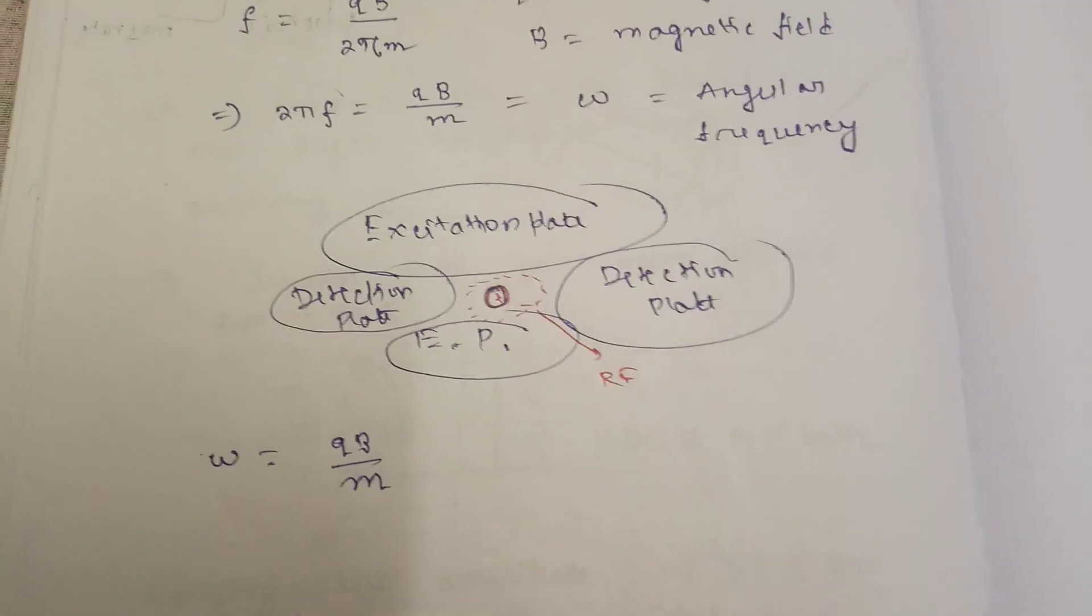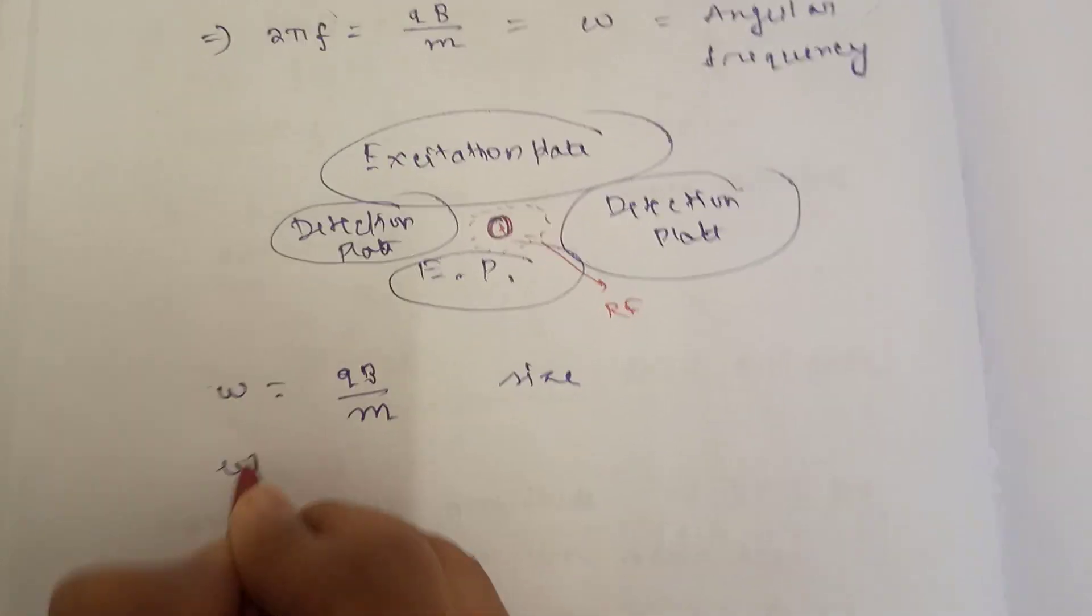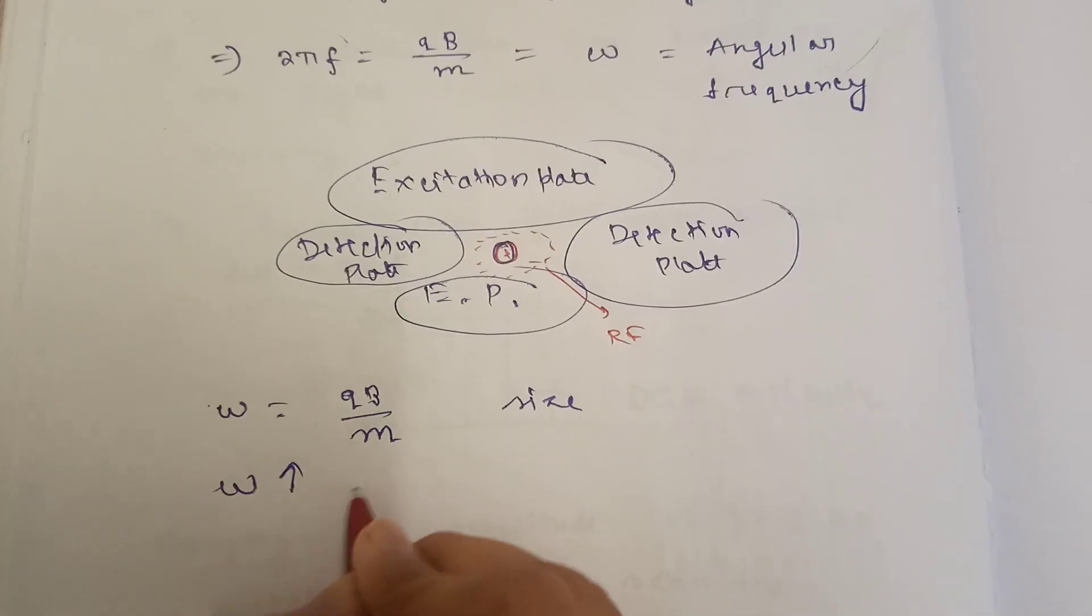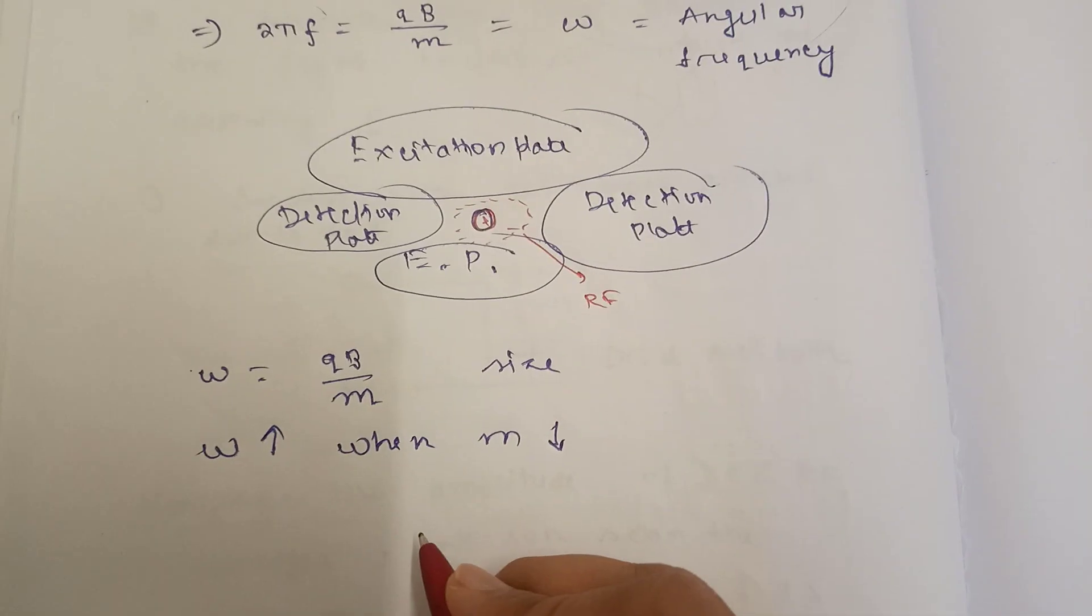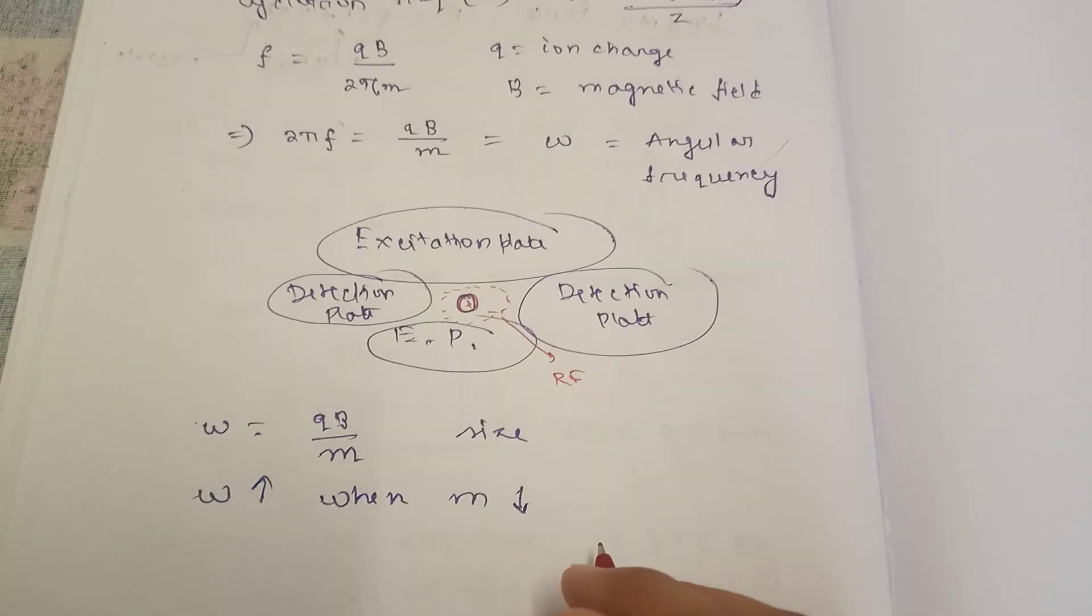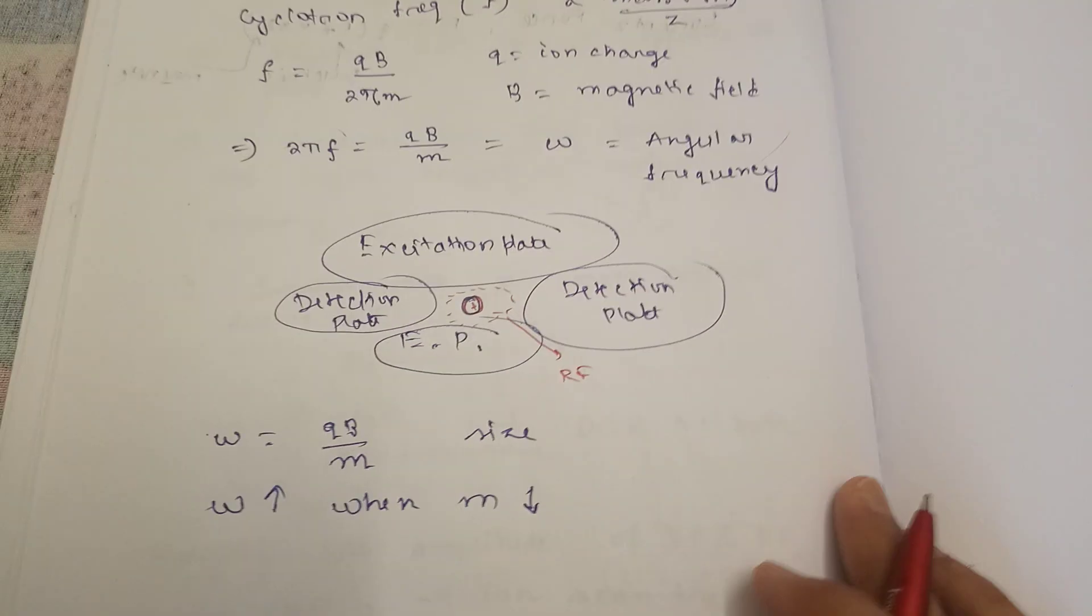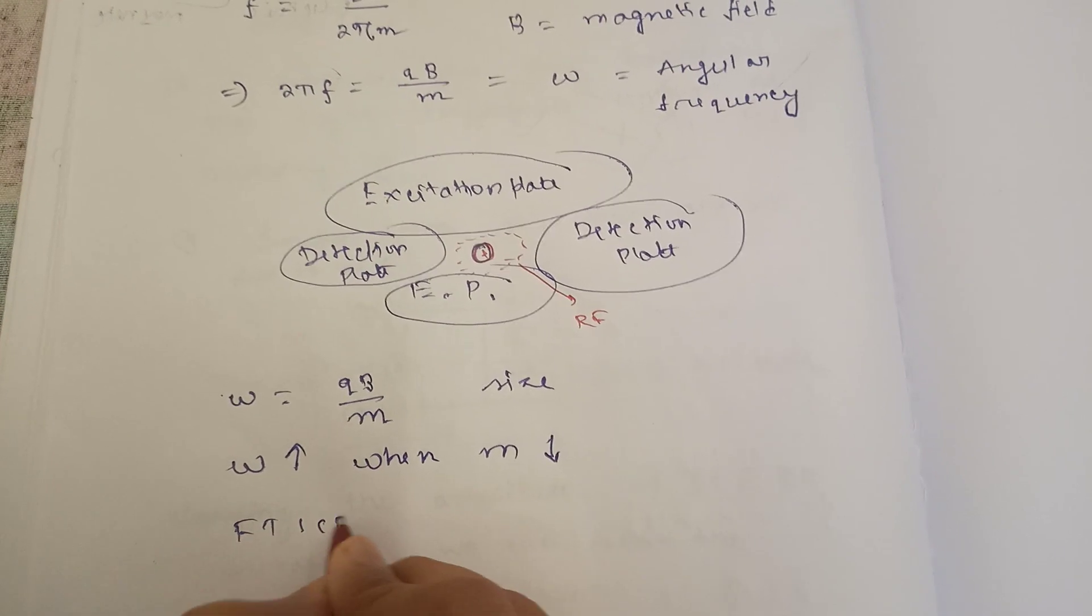Check the equation: ω = qB/m. So it's dependent on the size. ω will be more when m will be less, and this is measured by the detector.